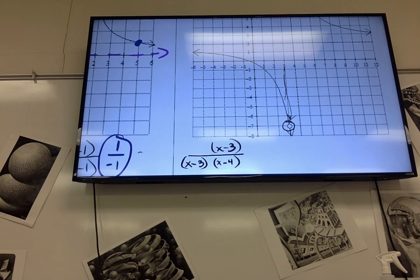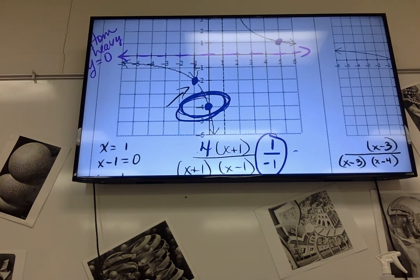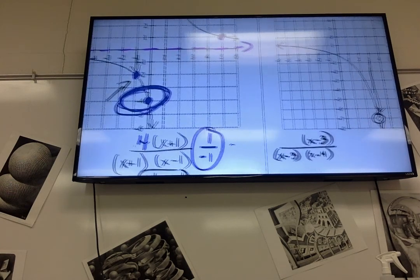How does a horizontal asymptote occur when it's not y equals 0? What had to be going on? What kind of heavy does it have to be? Top heavy gives us slant. Bottom heavy gives us 0. Same. So it must be same heavy.